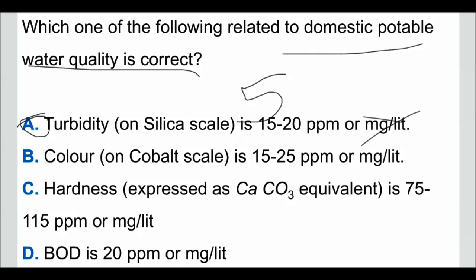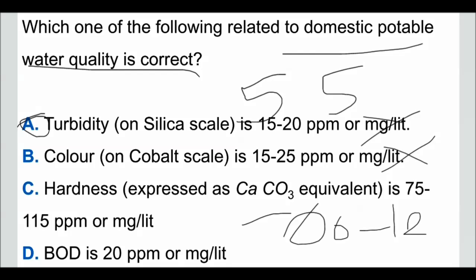Option B: color on a Gopal scale is 15 to 25 ppm or milligram per liter. According to domestic portable water quality, the color on a Gopal scale is limited to 5 ppm, so option B is also not correct. Option C: hardness is 75 to 115 ppm or milligram per liter. It is slightly related to domestic portable water quality, as the normal hardness range is 60 to 120, so option C is slightly matched.